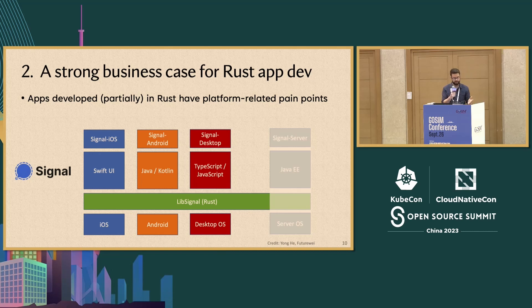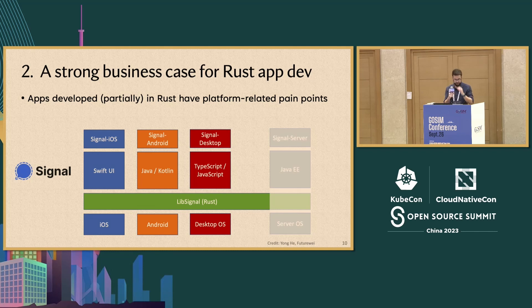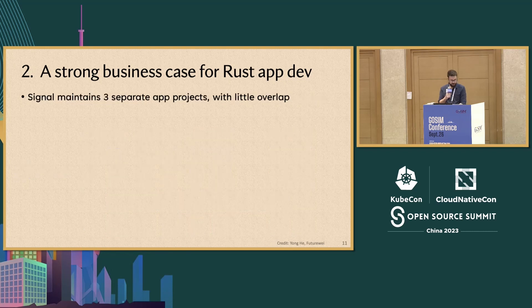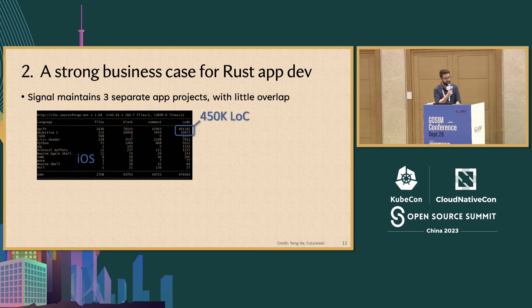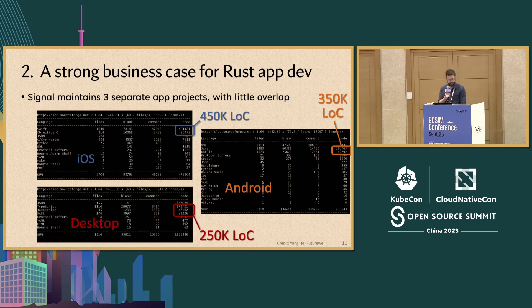All of the front-end UI components and platform API interactions are written in native repositories. On iOS, SwiftUI; Android, Java and Kotlin; Desktop uses Electron, so TypeScript and JavaScript; and even their backend is Enterprise Java. To release functional applications on all of these platforms, they have to maintain separate application repositories with not a lot of overlap. These aren't small either — almost half a million lines of code just for the iOS app, 350,000 for Android, and a quarter million for desktop.